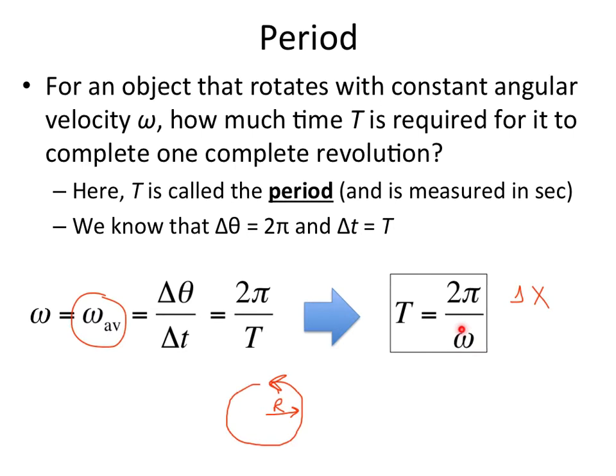So before we would say time would be delta x over velocity. Well, this is the rotational analog to that. Our displacement around the edge of the circle is 2π radians around the edge. Divide that by our angular velocity, the number of radians per second, and then we have the amount of seconds it takes to go 2π radians around the edge of that circle.